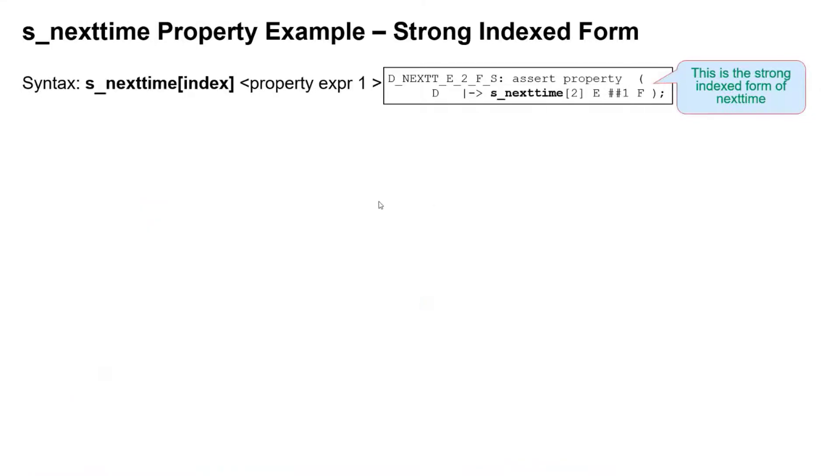So the difference between that and the strong form is the s_underscore on the front. So there's many properties, the LTL kind of properties that were introduced into the language reference manual in 2009. And if it's got s_underscore on the front, it means it's a strong property. So that's the same as the previous example, other than we've got s_underscore here.